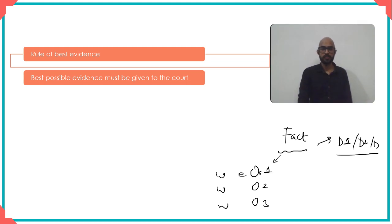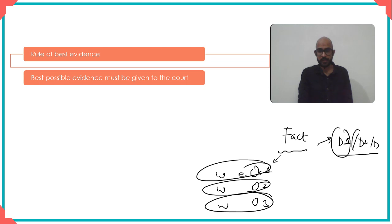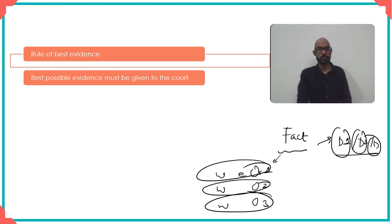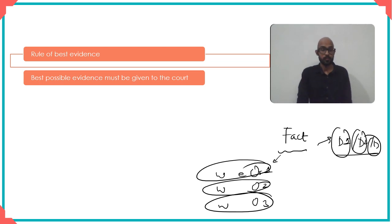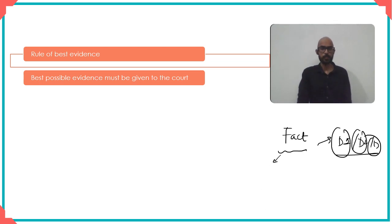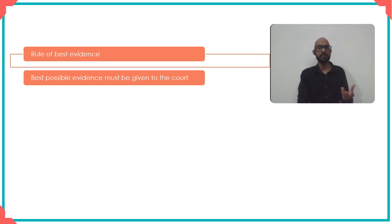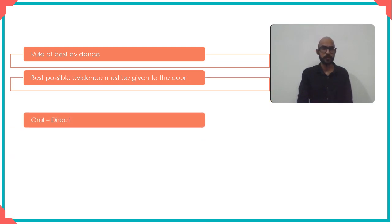There can be many options. It's possible that many people saw a certain fact or that there are many photographs of a certain fact. Now, do you bring all of these to the court, or do you give the worst out of them, or do you give the best? The rule of best evidence is that when you have a certain number of evidences, you give the best possible evidence to the court.